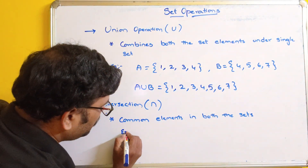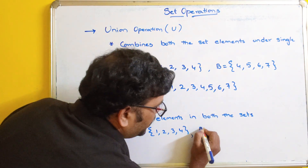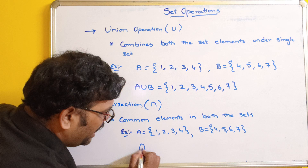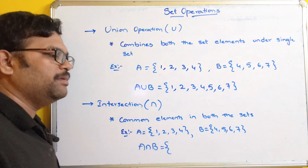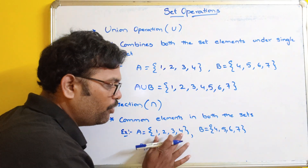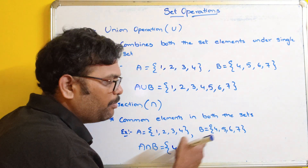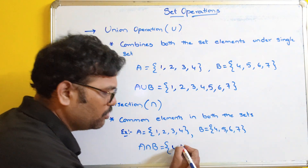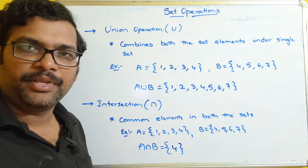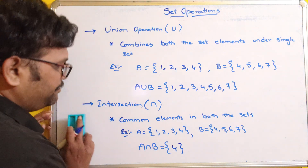Let us take the same example: A = {1, 2, 3, 4} and B = {4, 5, 6, 7}. Now A intersection B will be the common elements of both sets. 1 is not common, 2 is only in A, 3 is not common, but 4 is a common element because it is available in both set A and set B. So A intersection B is {4}.